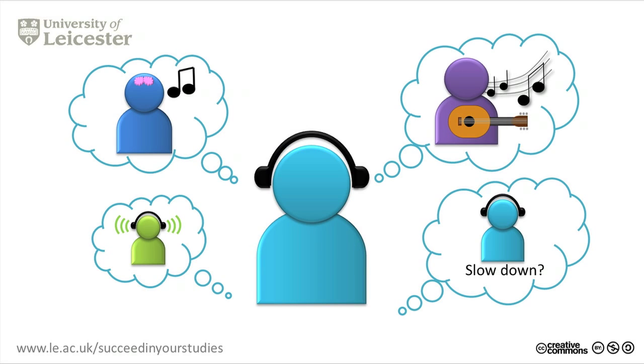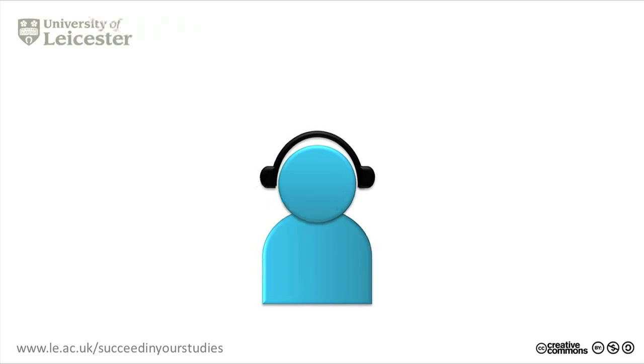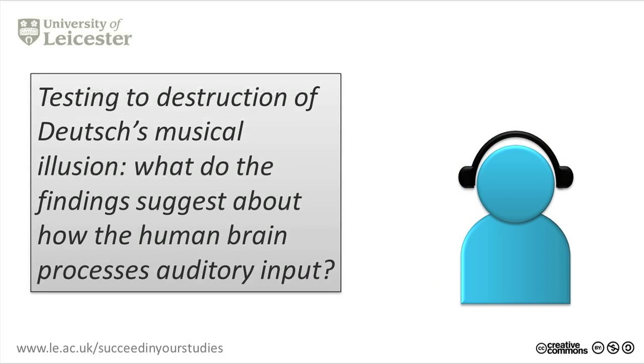So, Tom decided to use all of these four related questions as his research questions. The questions come together under his thesis title Testing to Destruction of Deutsch's Musical Illusion. What do the findings suggest about how the human brain processes auditory input?